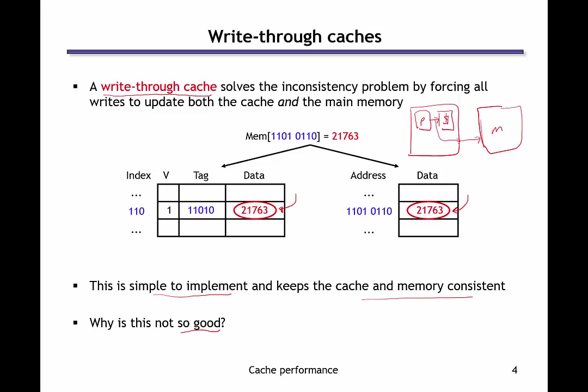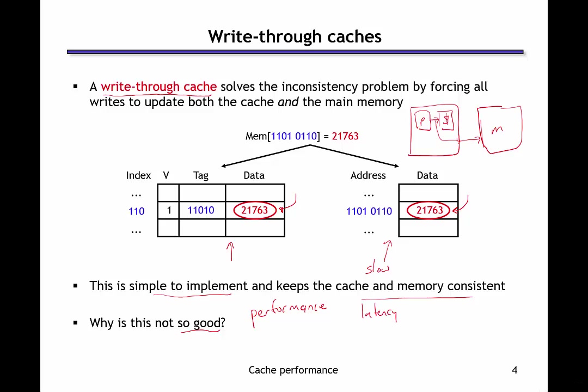Why is write-through not a great option? When we introduced caches, it was because main memory is slow. One reason not to use write-through caches is performance. You might think the main issue is latency, but latency is actually not the main issue. Even though it takes many cycles to write to main memory, we can avoid stalling the processor — as soon as we've updated the cache, it's safe to continue. Most processors handle this with a write buffer: when we complete a store, we put it into the write buffer and allow it to be copied to main memory in the background. So latency itself is not the problem.